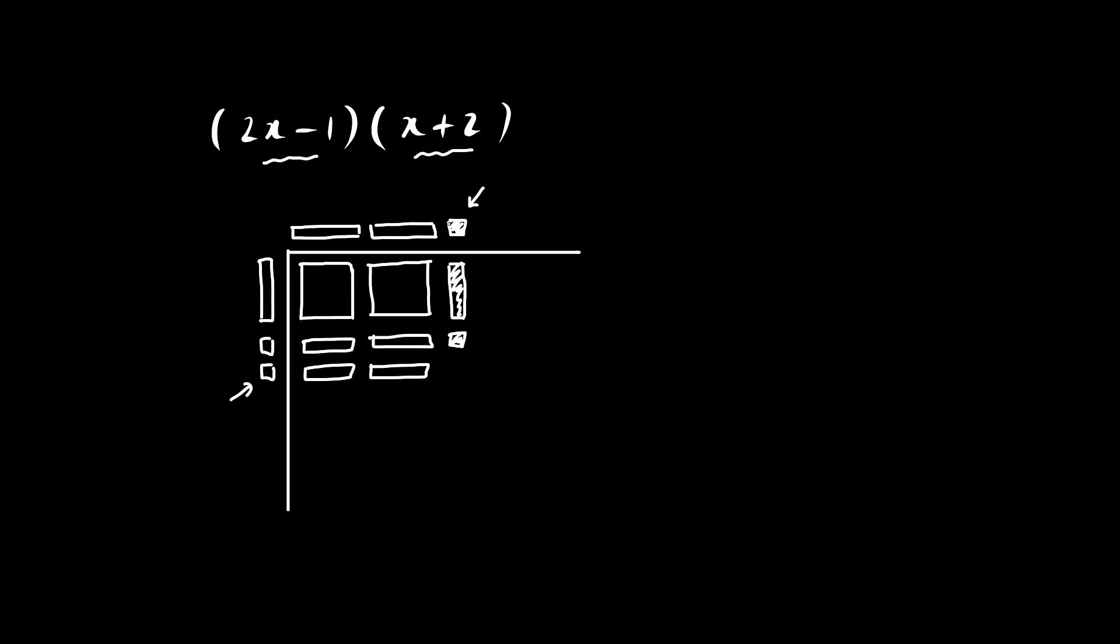So even without understanding the process of FOIL—first, outside, inside, last—we could use algebra tiles to help us predict the product. x squared plus 4x but minus x here for a total of 3x, and this here would represent minus 2.